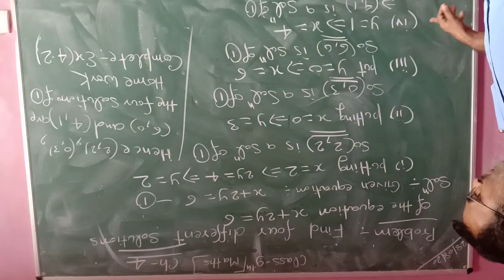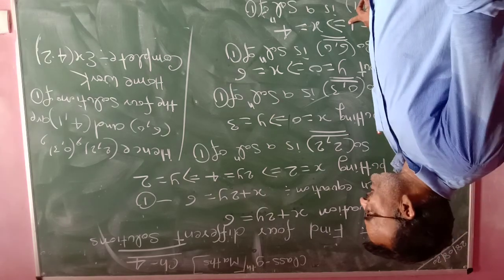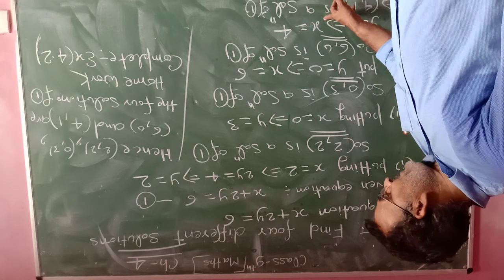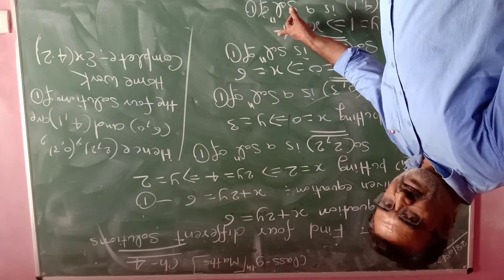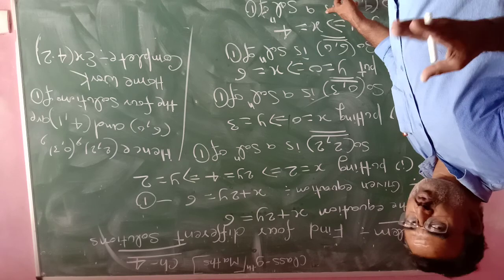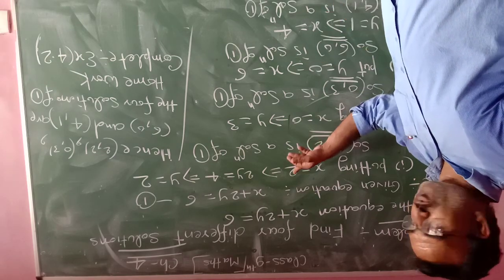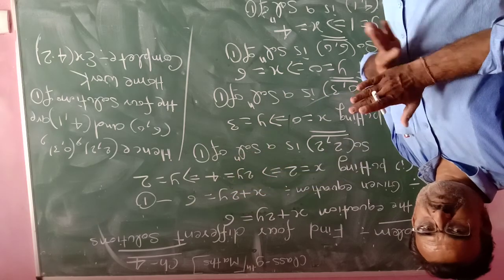Similarly, for the fourth solution, putting y equal to 1 in the above equation, we have x equal to 4. Then, 4 comma 1 is another solution of the given linear equation, which is x plus 2y equal to 6.